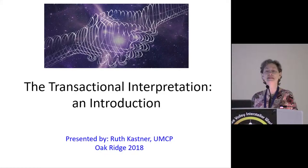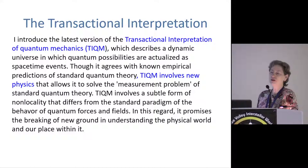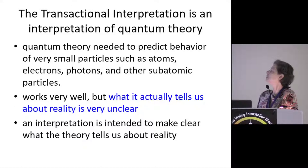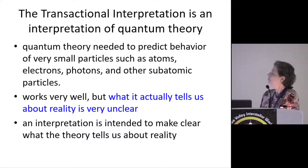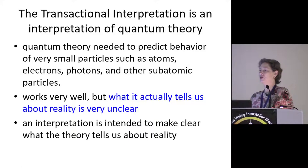What I'm going to be talking about briefly today is an approach that I think allows us to make some sense out of quantum theory, without resorting to what I think are hand-wavy attempts to explain away some of the mysteries and paradoxes. The transactional interpretation is an interpretation of quantum theory — a theory needed to predict the behavior of very small particles such as atoms, electrons, and photons. It works very well, but what it actually tells us about reality is very unclear, so the idea of interpreting the physical theory is to try to make clear what it tells us about reality.